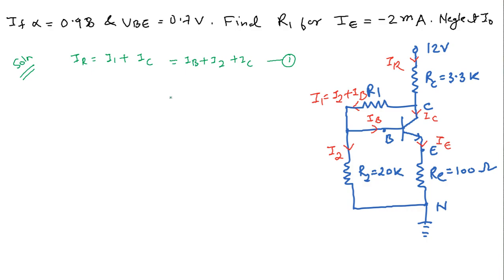The emitter current I is given as minus 2 milliampere, meaning the current direction is opposite to that assumed in the circuit diagram. If we assume the current direction in the downward direction, then I will be plus 2 milliampere. So we will take plus 2 milliampere from the circuit in which we have assumed the current direction.